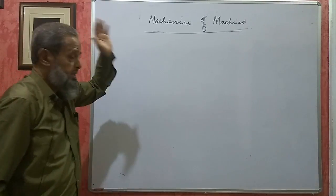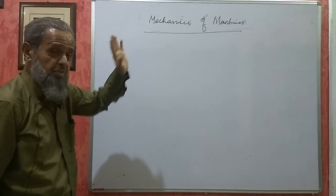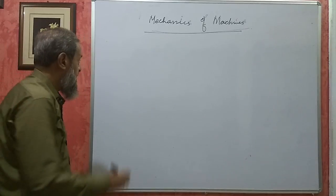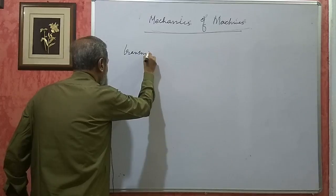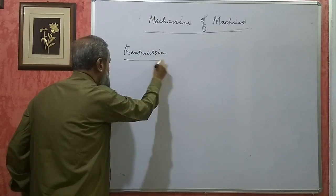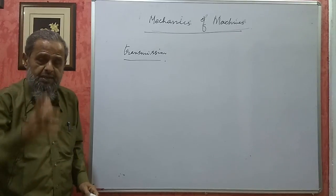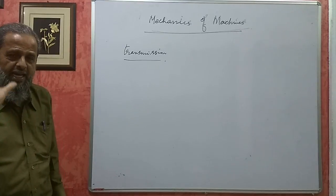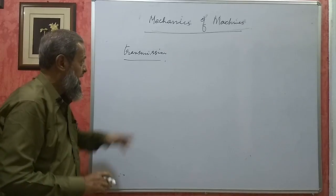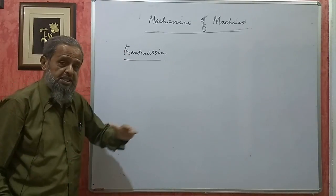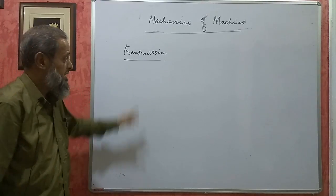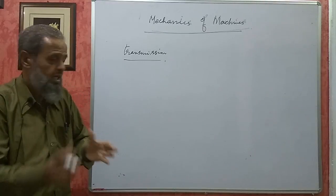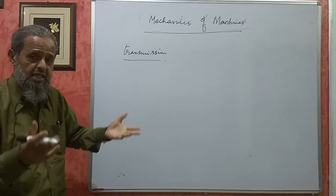I am taking up the second unit of mechanics of machines, that is the unit is power transmission. Transmission means power — whenever a mechanical person says power it is mechanical power, whenever an electrical person says power it is electrical power. Transmission means sending power from one place to another place, similar to what we call transportation in ordinary language.